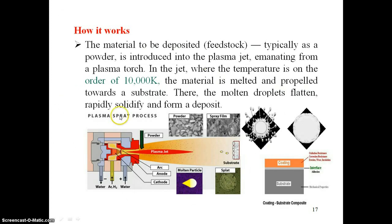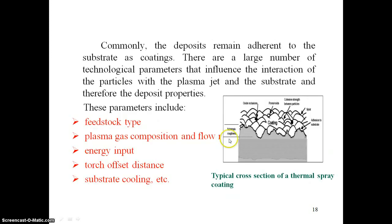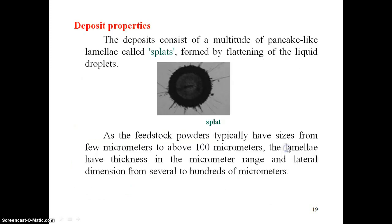Plasma forming gases have dissociation energy, ionization energy, and thermal conductivity as important parameters when selecting gases for plasma generation. A diagram shows how the process works: powder particles are injected inside the plasma jet, where the exit plasma jet accelerates them, and they get coated onto the substrate. The coating, substrate, and interface layer are formed in this way. Deposit parameters include feedstock type, plasma gas composition and flow, energy input, torch offset distance, and substrate cooling.